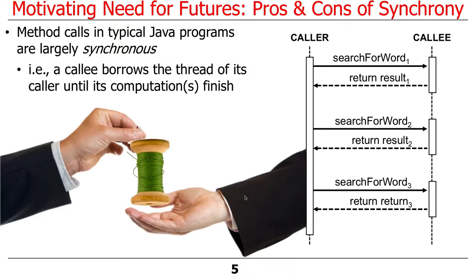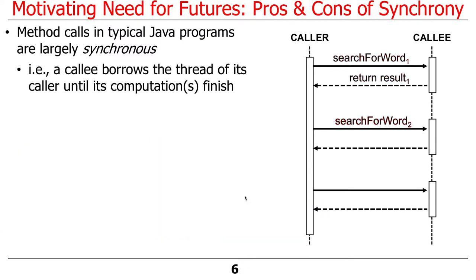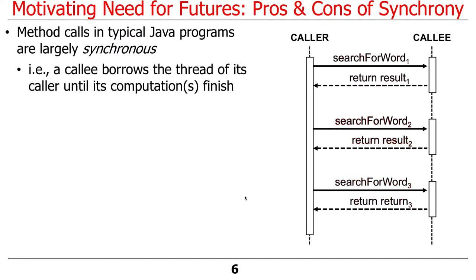What synchronous means is the callee — the thing that's called — borrows the thread of control of the caller until the computations are finished. Think about a normal method call — that's exactly what happens. We make calls and we get results back. The callee borrows the thread of control of the caller, does the work, and gives the result back. There are pros and cons to this kind of approach.